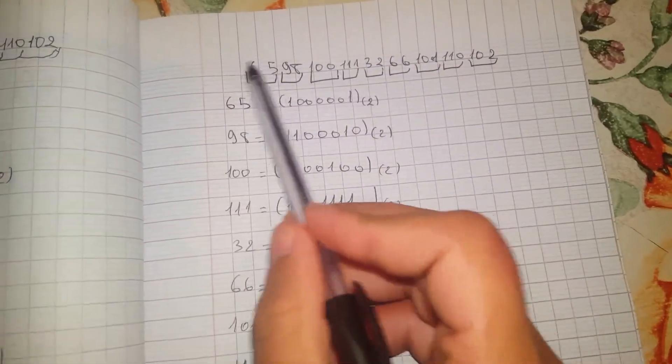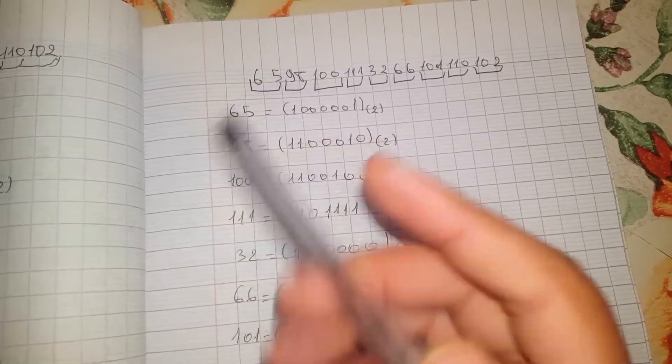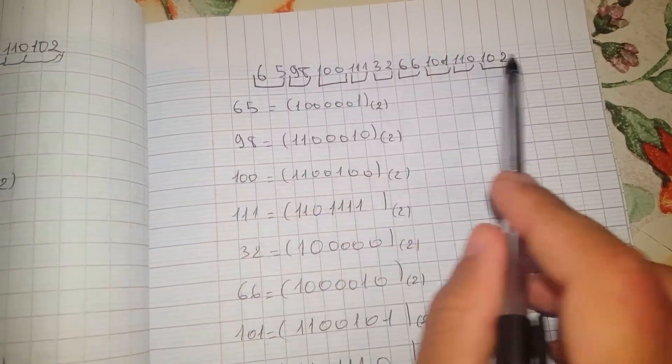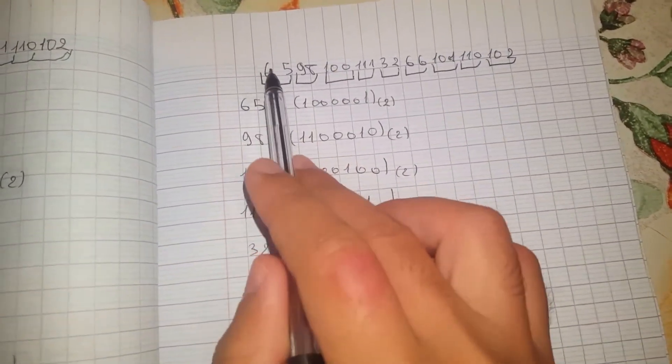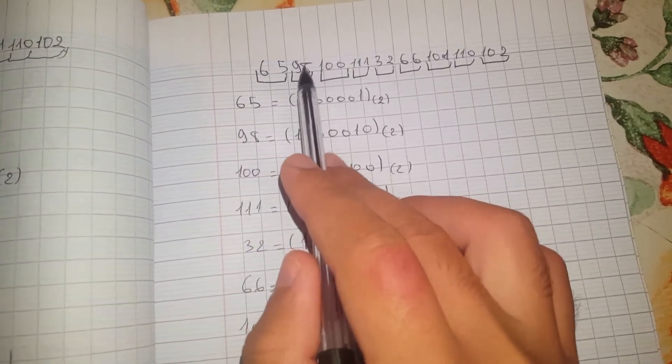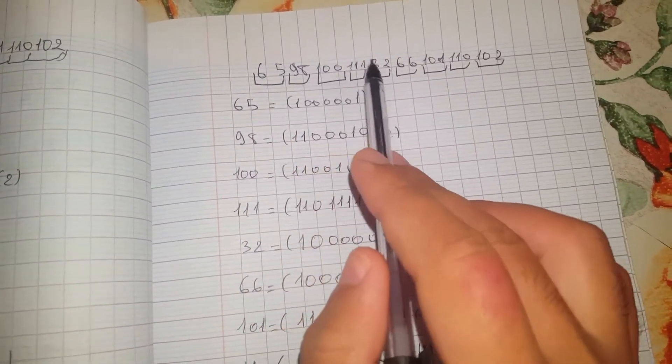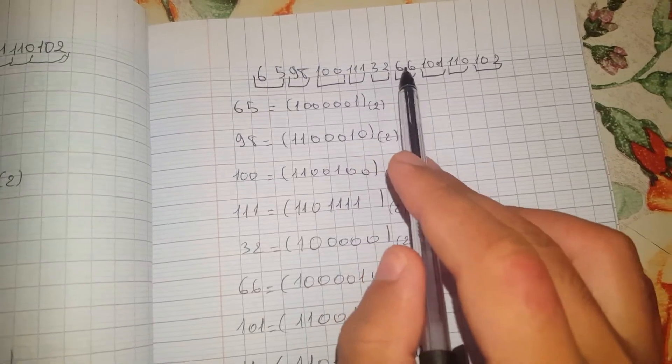You will convert every number, but don't convert the whole number. Just 65, 98, 100, 111, 32, 66—just like I did here.